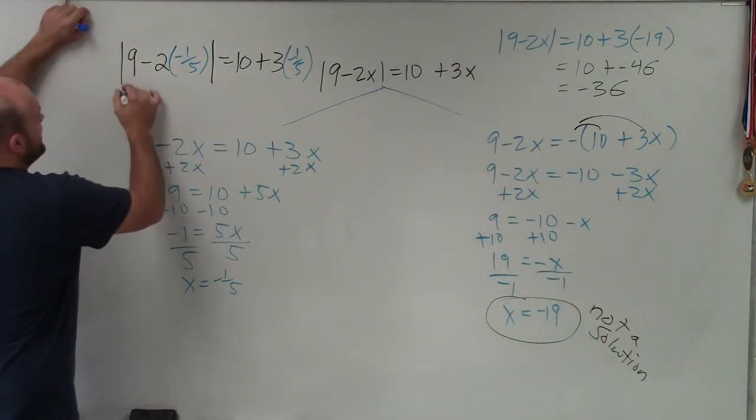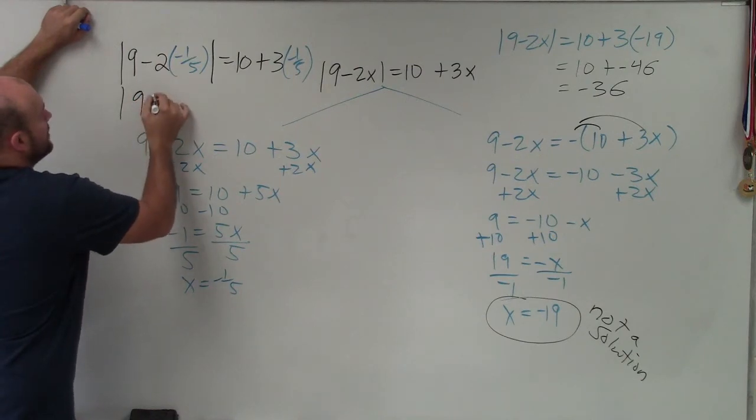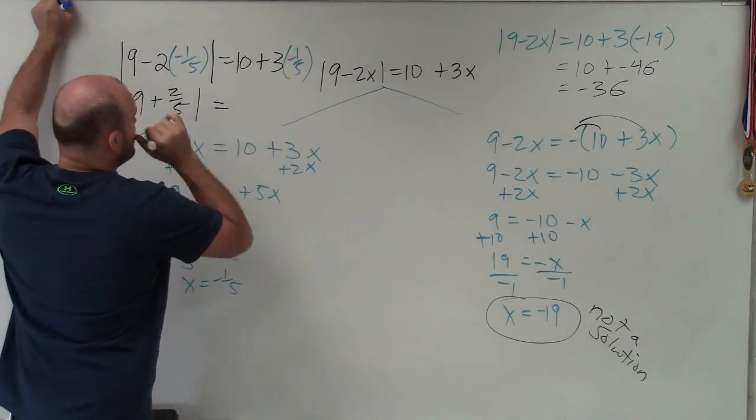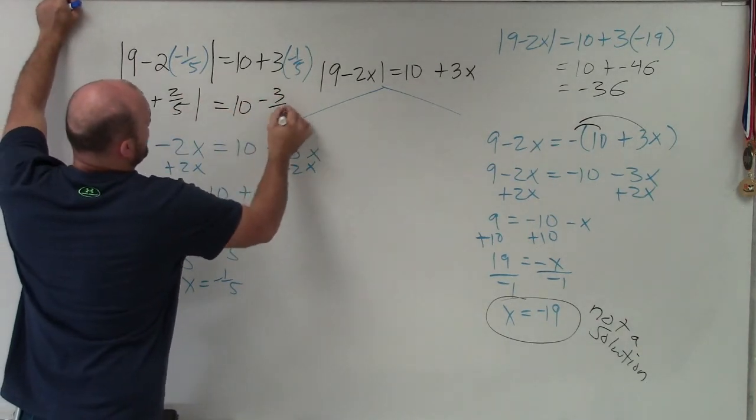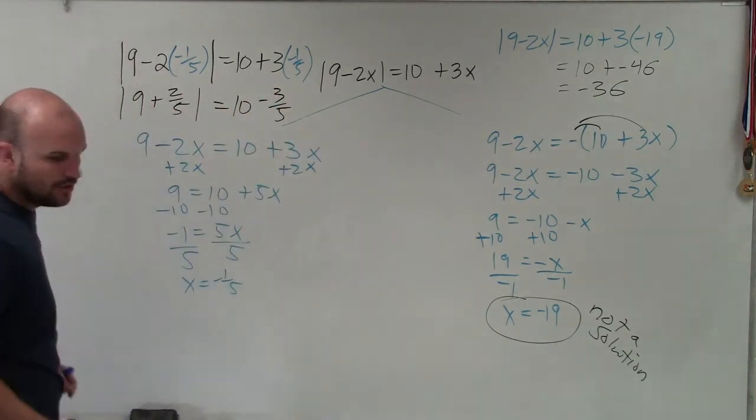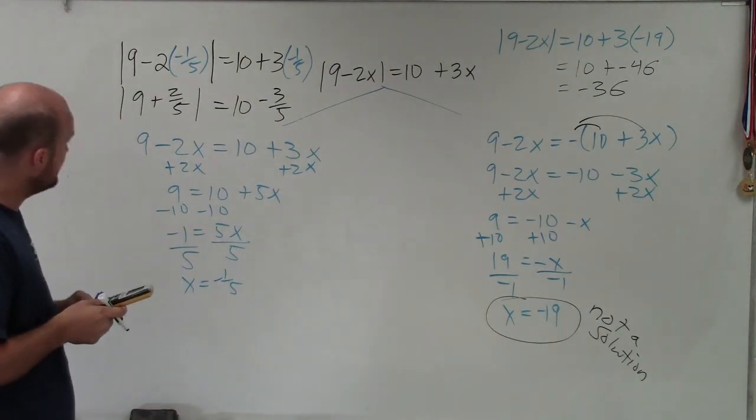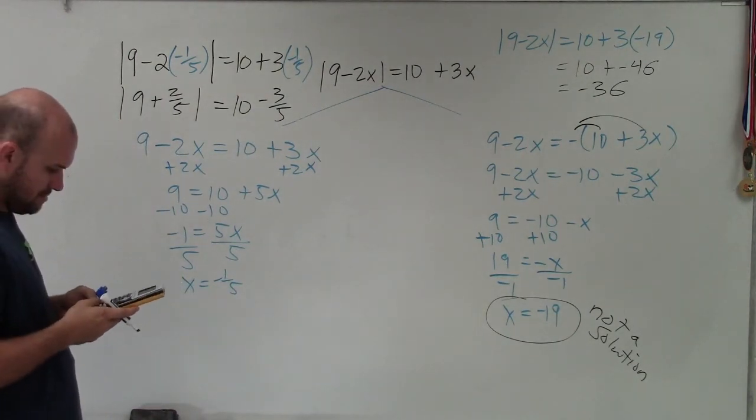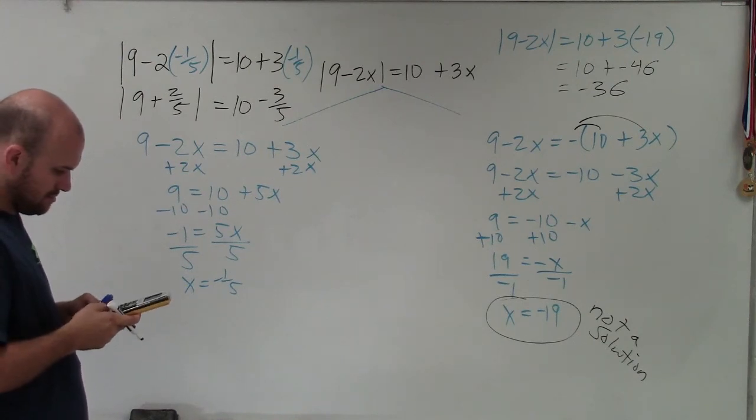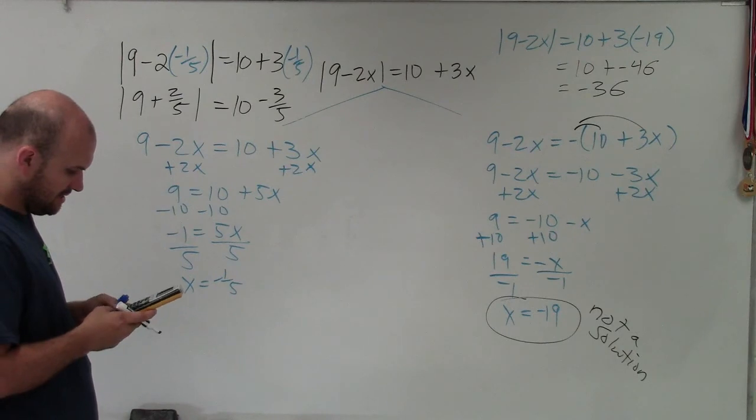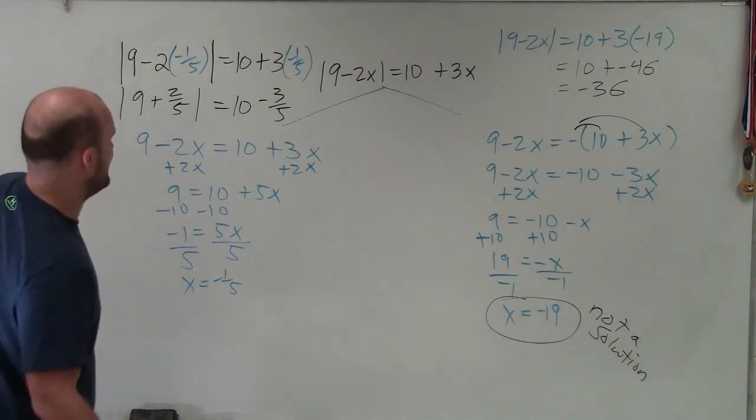And here, I'll just go ahead and simplify this. So now this becomes 9 plus 2 fifths is equal to 10 minus 3 fifths. And when you go ahead and check your answer on your calculator by plugging everything in, you get a solution.